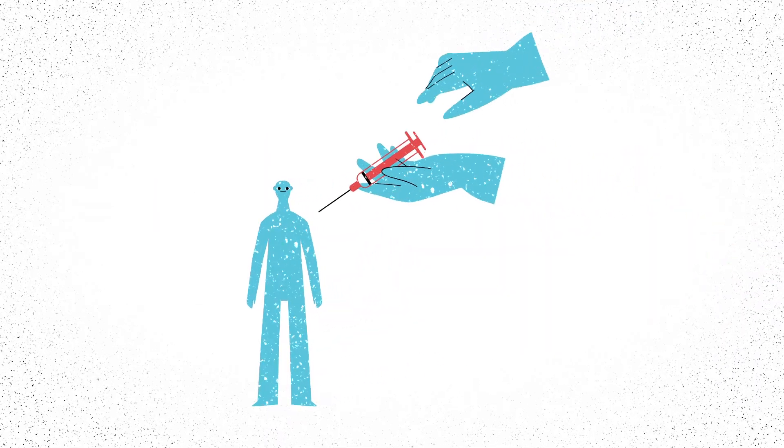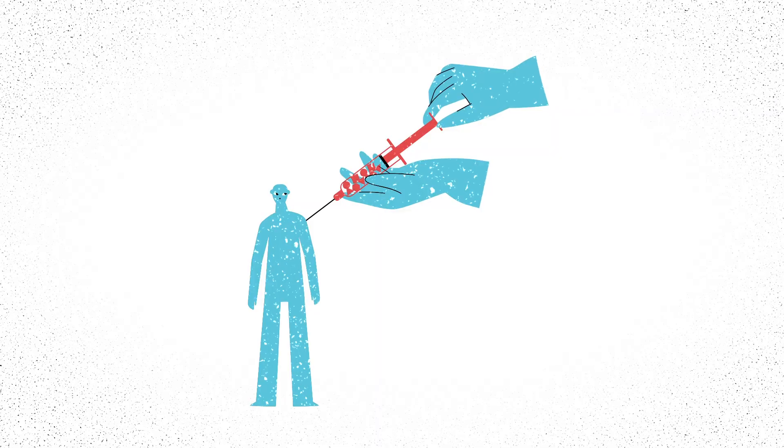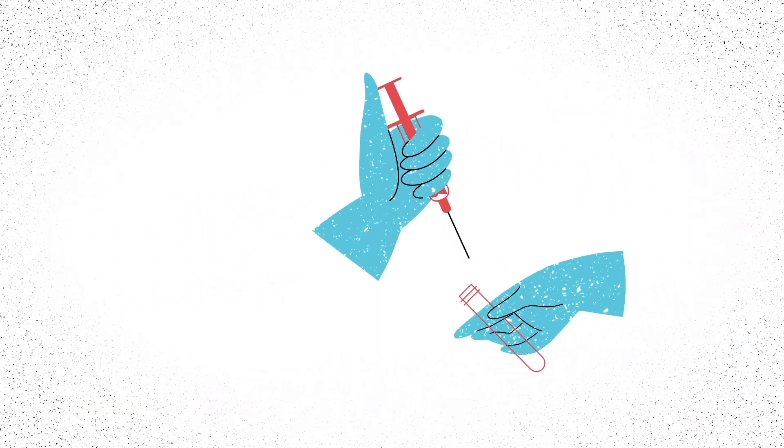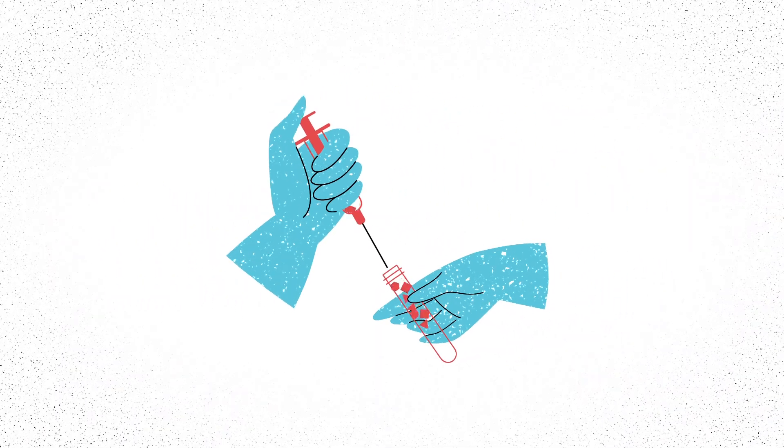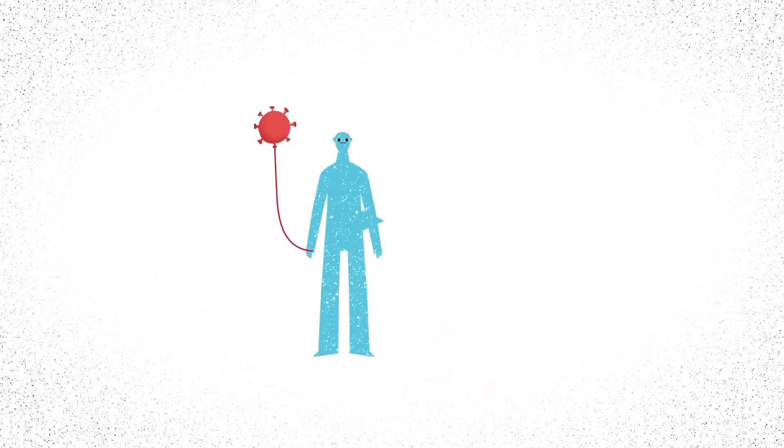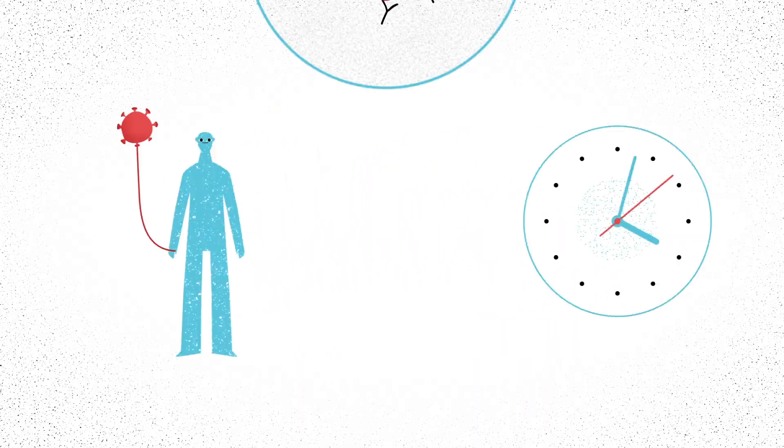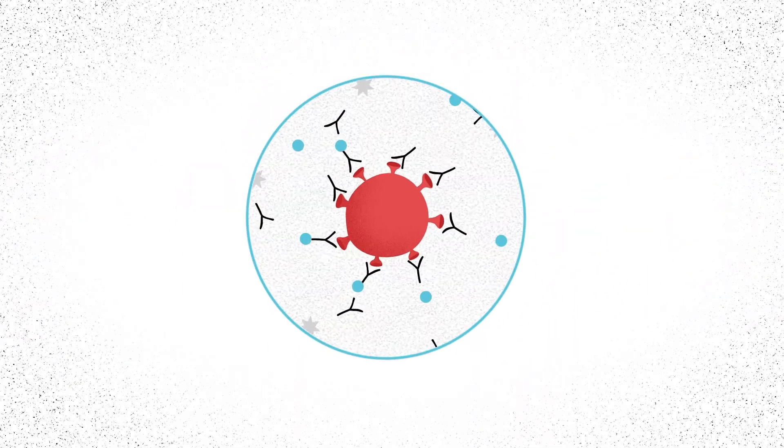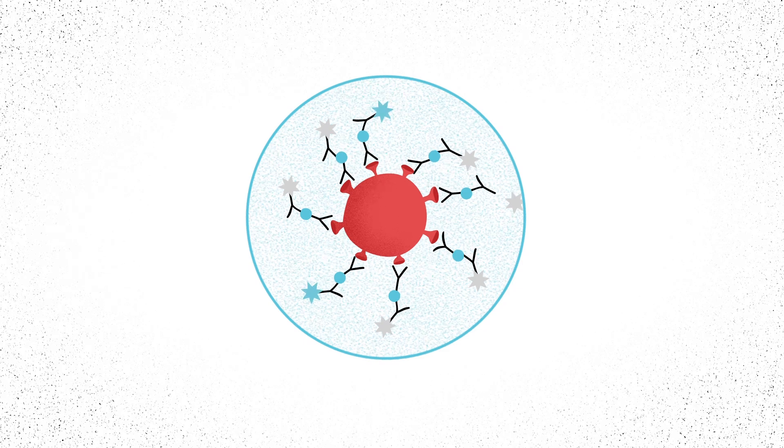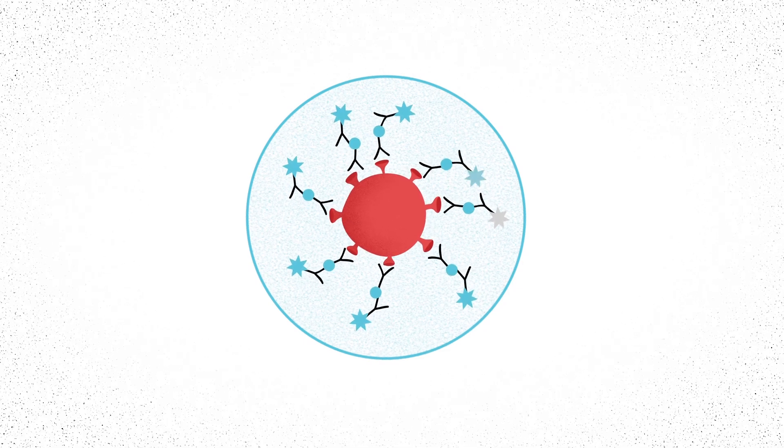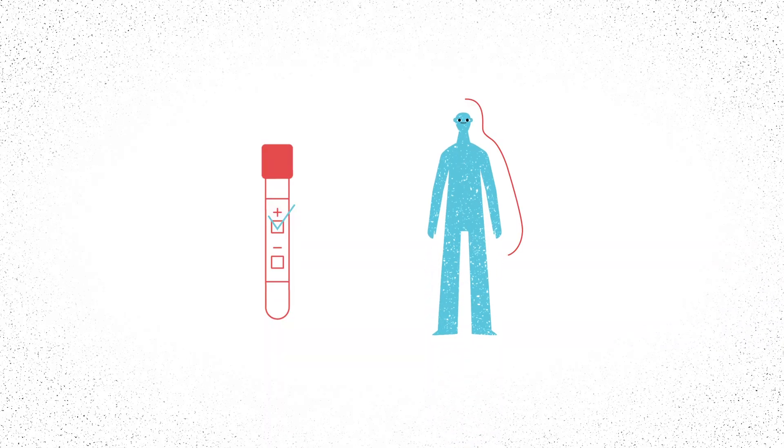Before the immunoassay, health professionals draw blood from an individual. This sample then comes into contact with a portion of the virus of interest. If the body has, in fact, been exposed to the virus in the past, the body's virus-specific antibodies will bind to it during the test. This reaction produces a change in color, indicating that the sample tested positive and that the individual has been exposed to the virus.